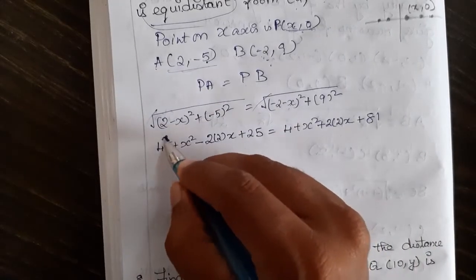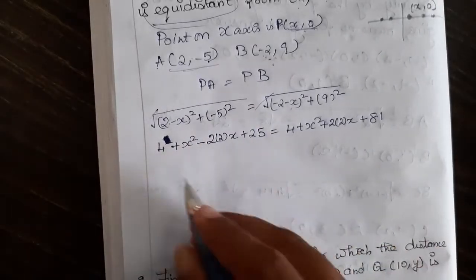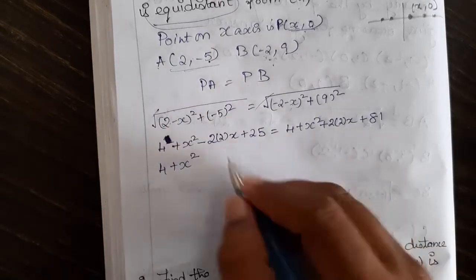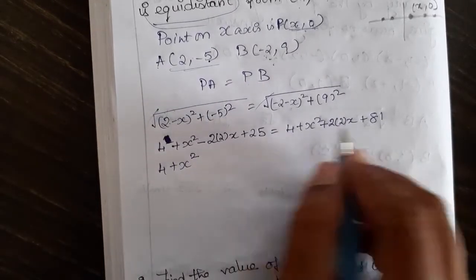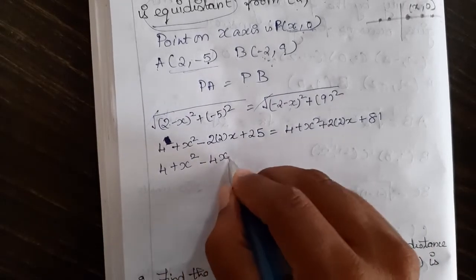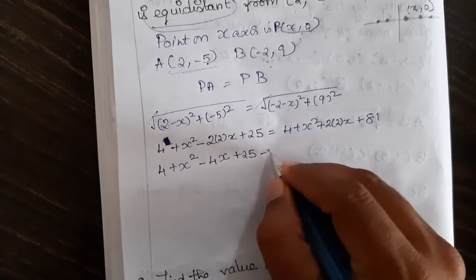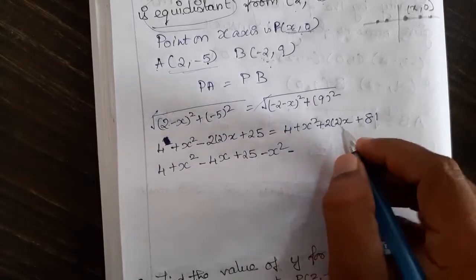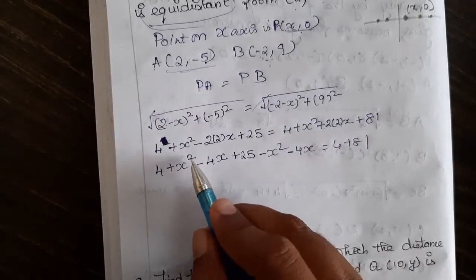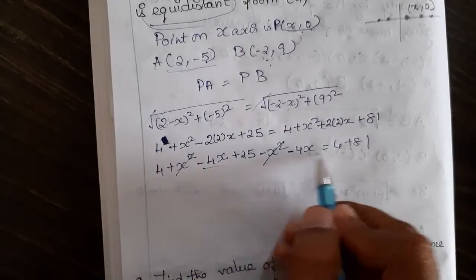We already squared so 2² is 4. Bringing everything to one side: 4 + x² - 4x + 25. Bringing the right-side x² gives minus x², and +4x comes over as minus 4x. So x² minus x² = 0. We now have -4x - 4x = -8x on the left.